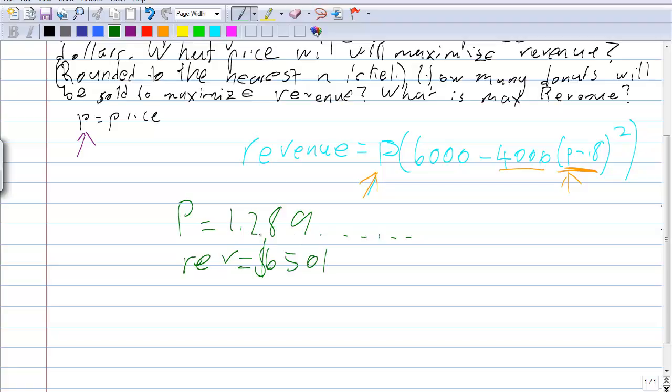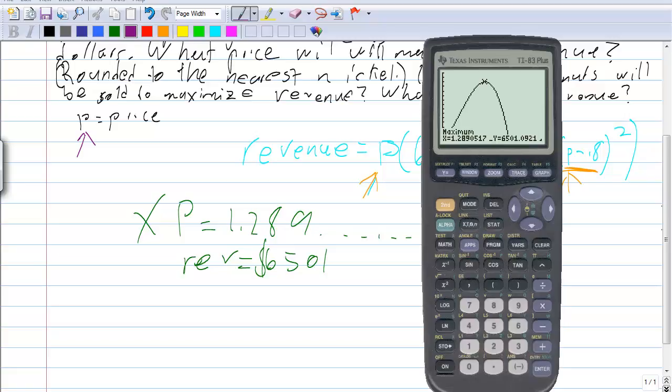However, if we just gave this, this would be wrong because we want the price to the nearest nickel. So if we gave this, this would be marked wrong as we have not finished the question yet. So what we're going to want to do is we're going to want to round it to the nearest. That would be 1.3.